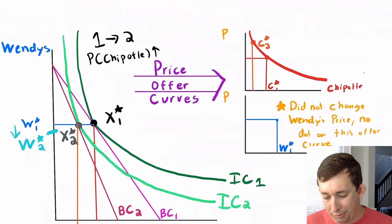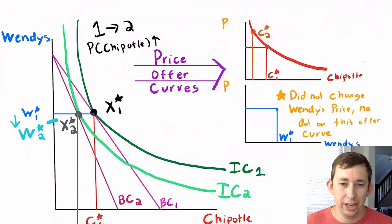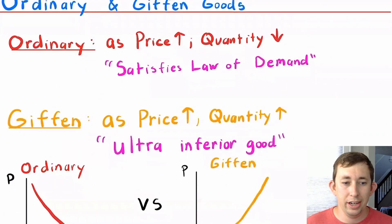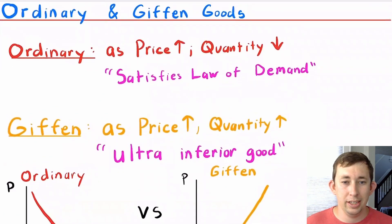This is going to relate to price offer curves, which we've covered in a previous video. So if you would like to get a refresher on the price offer curve, feel free to check out that video. But ordinary and Giffen goods are going to relate to how the quantity of that good relates to price.